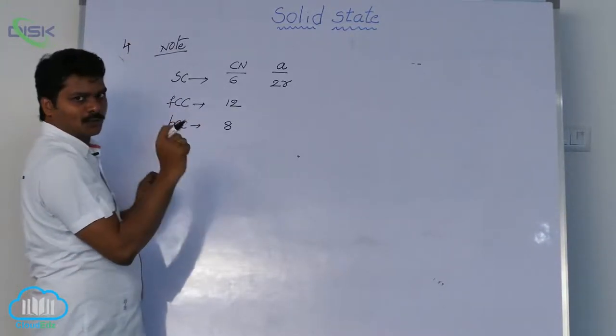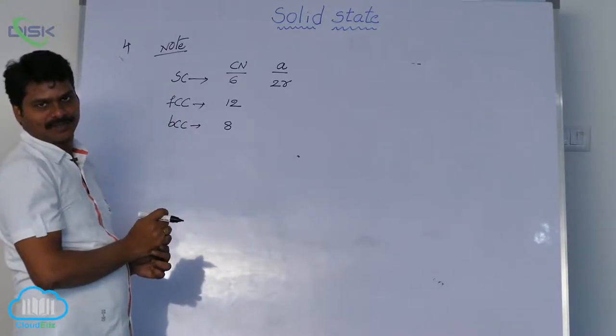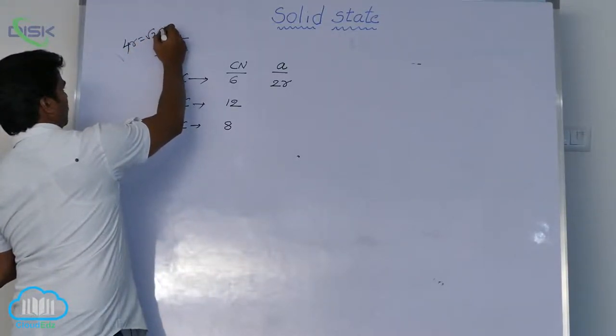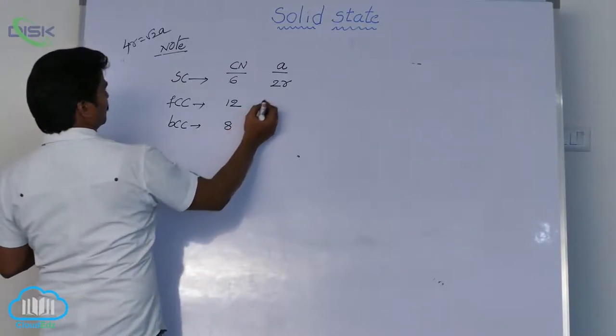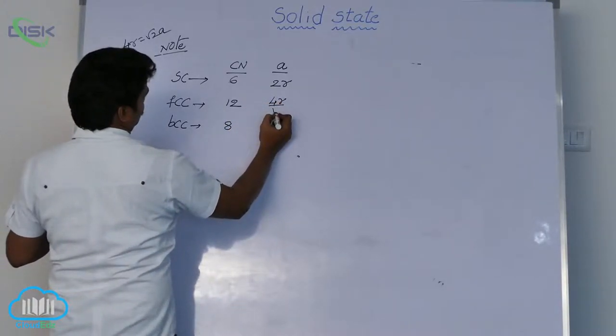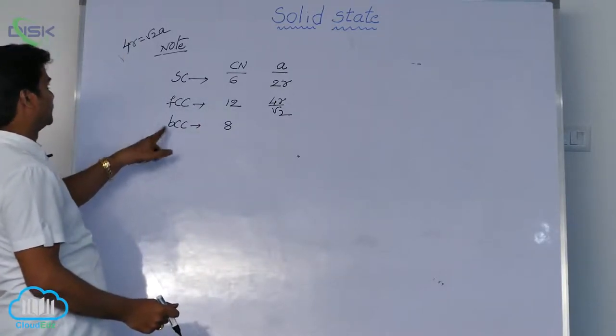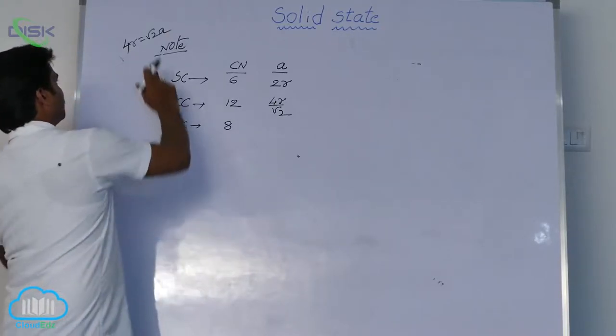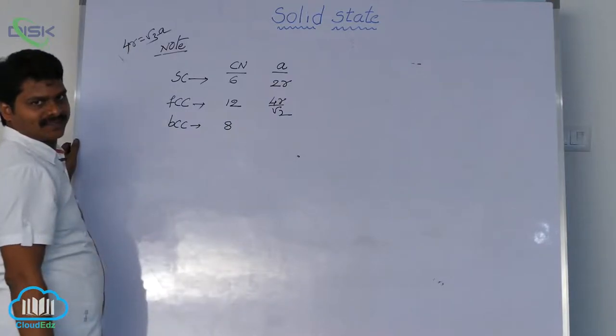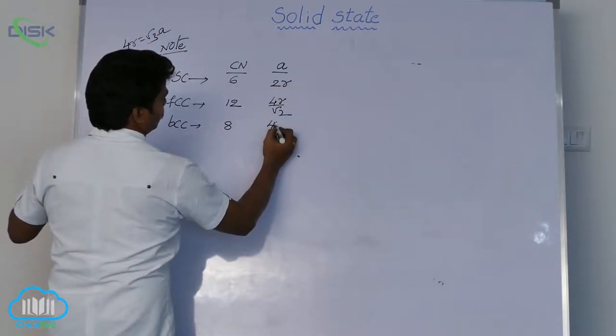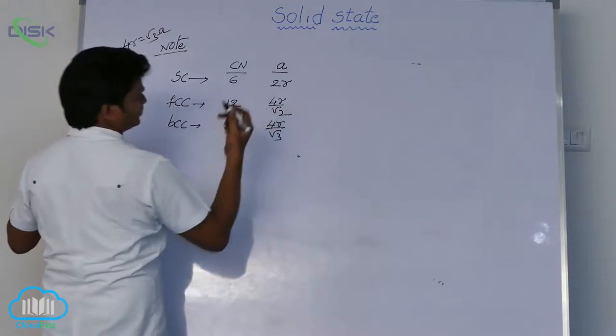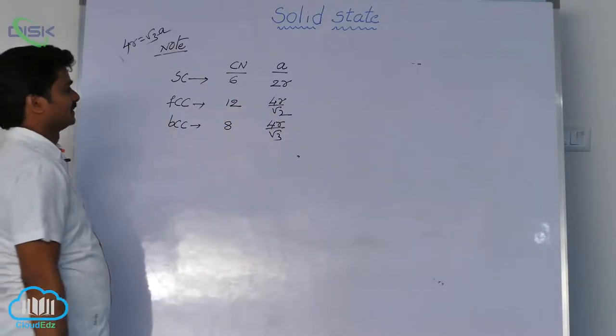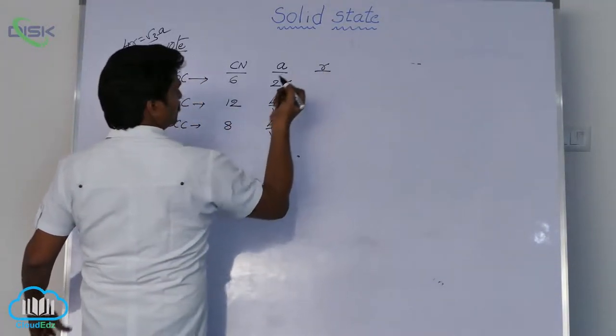That means a is equal to 4r by √2. In BCC, we take body diagonal length √3a, so 4r is equal to √3a. That means a is equal to 4r by √3. This is edge length in different cubic geometries and the radius of atom in different cubic geometries.